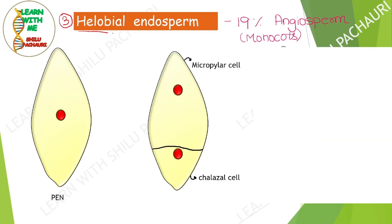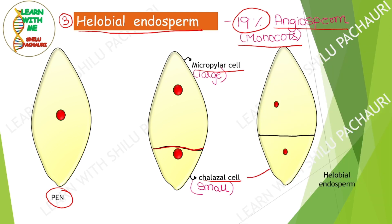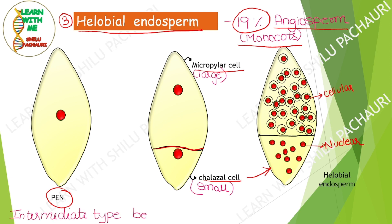The third type of endosperm is halobial endosperm, seen in around 19% of endosperms and mostly in monocots. When the primary endosperm nucleus divides, it is immediately followed by transverse wall formation, resulting in two unequal cells. The micropylar cell is larger, while the chalazal cell is smaller. The nucleus of the chalazal cell remains undivided or divides slightly, while the micropylar nucleus divides by free nuclear division. Centripetal cell wall formation then follows. The micropylar end is similar to cellular endosperm, while the chalazal end is similar to nuclear endosperm — making halobial endosperm intermediate between the two types.